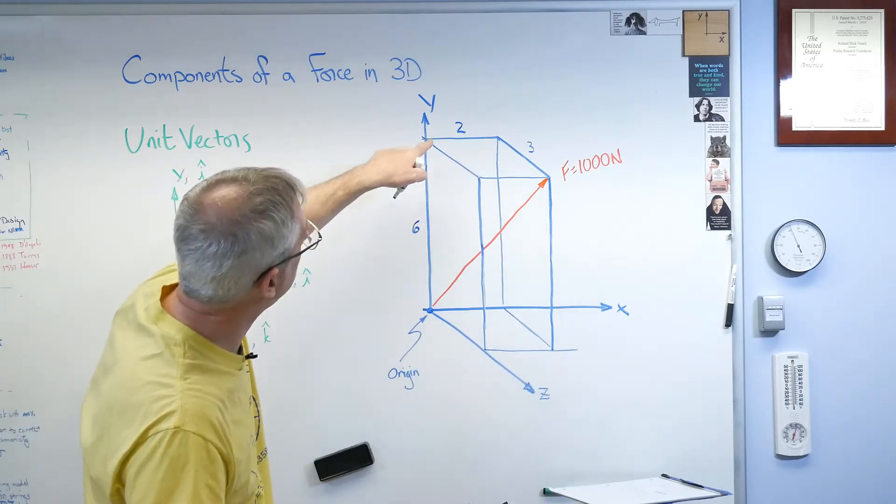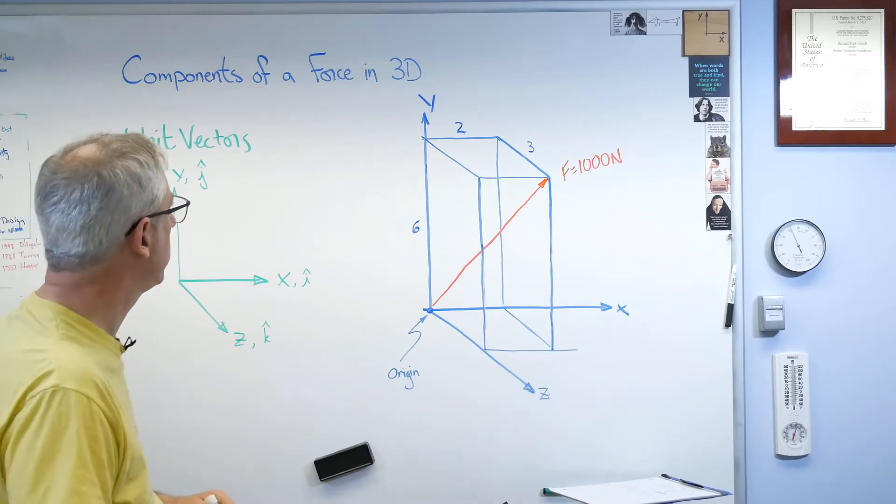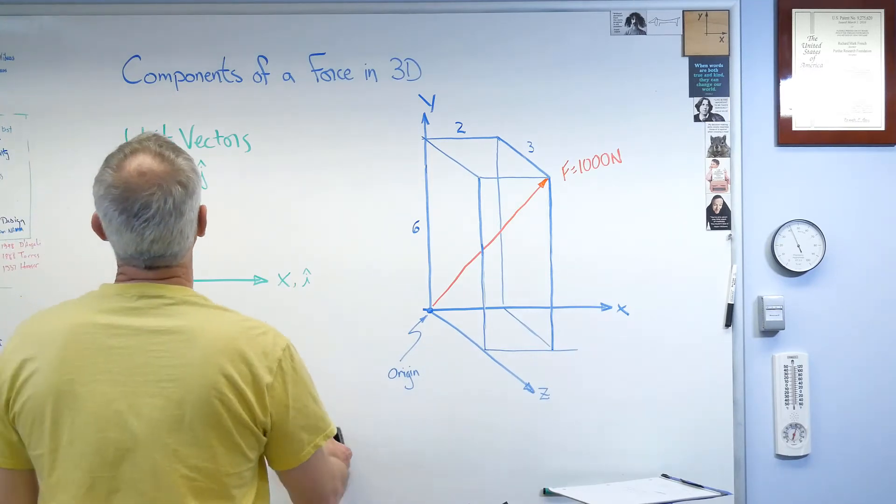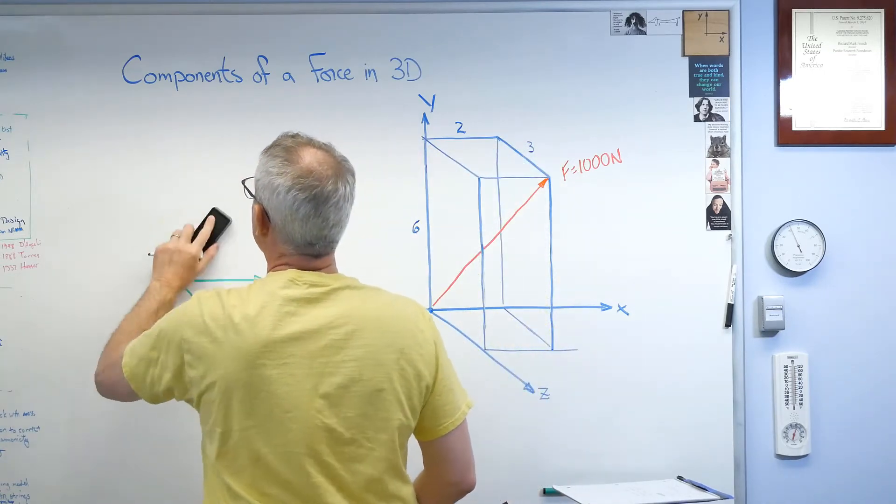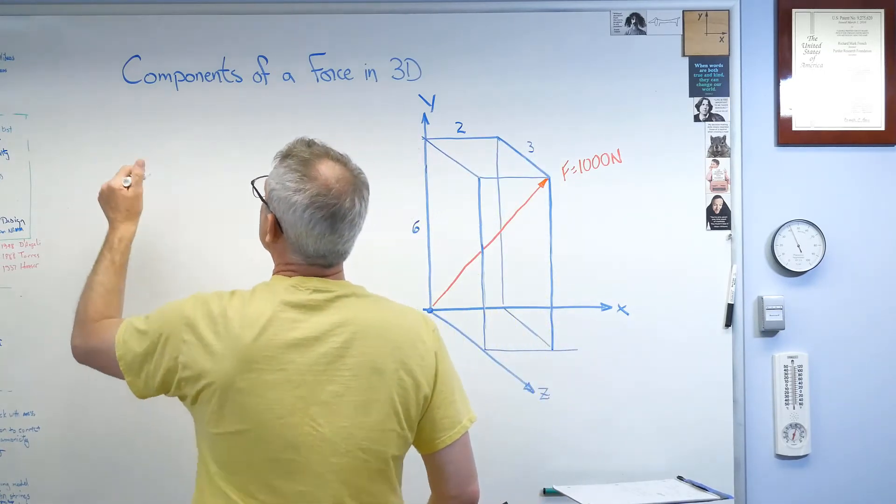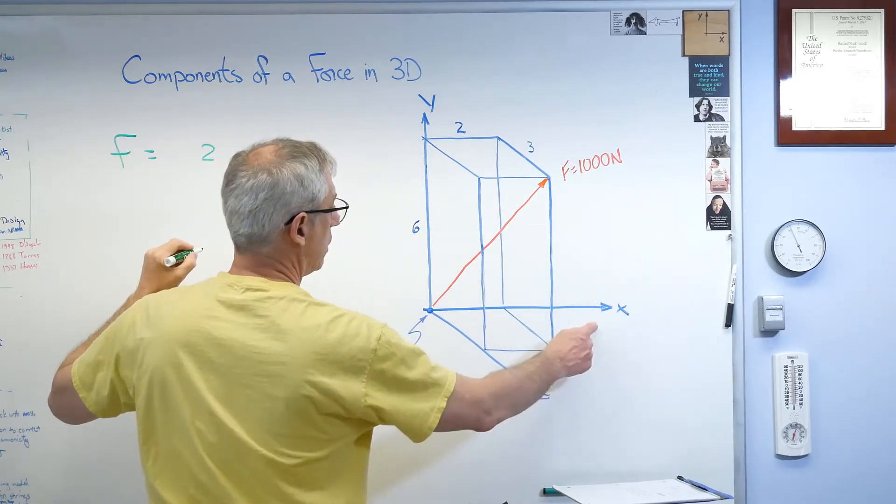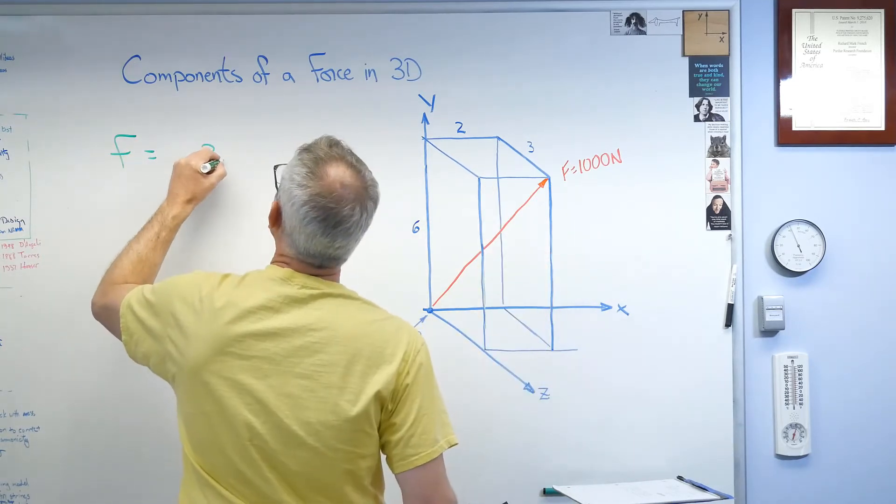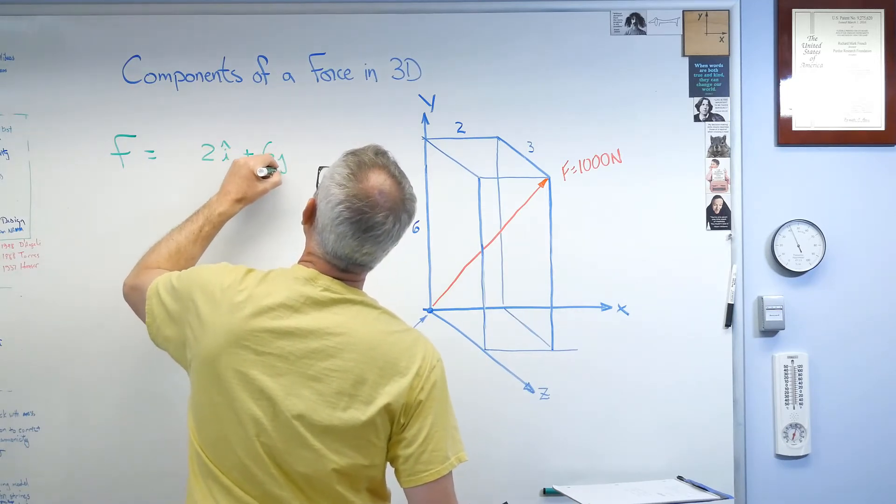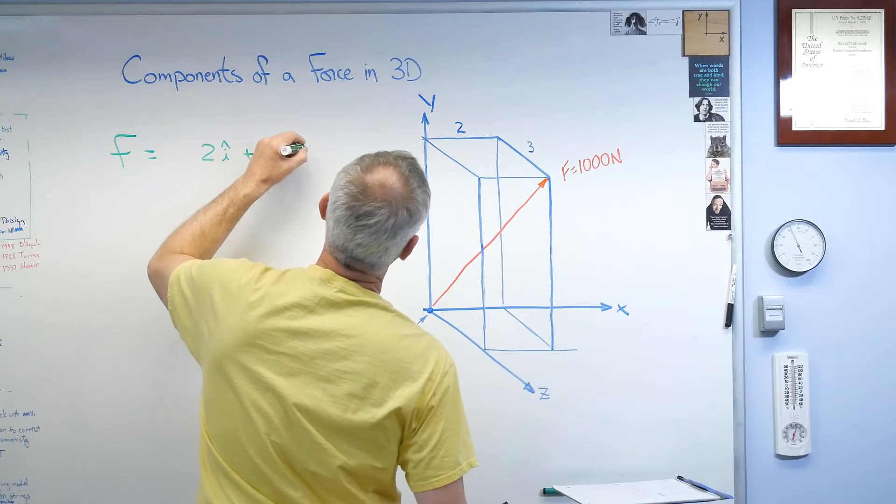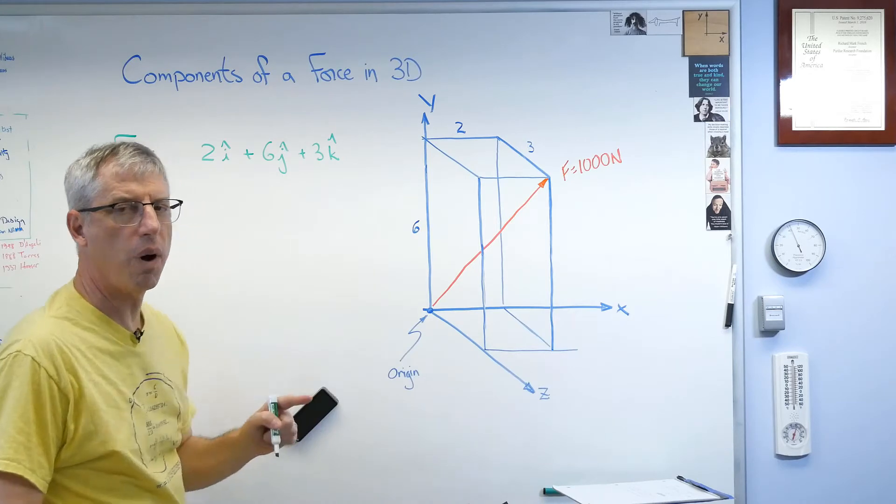So let's see here. If I wanted to write out a unit vector based on that 2, 3, and 6, what would that look like? Well, let's get started. So my force is 2 in the x direction, so 2i plus 6j plus 3k, well, not quite.